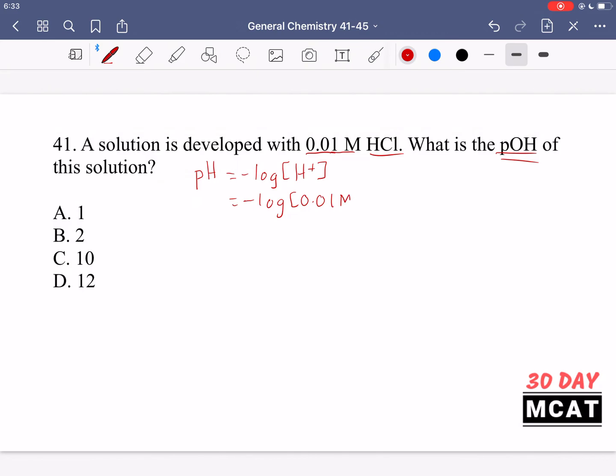0.01 molar and our pH is equal to 2 and you should know that the relationship between pH and pOH is that they add up to 14. So if I were to plug into pH and rearrange to get the pOH I would get 12. So D is the correct answer here.